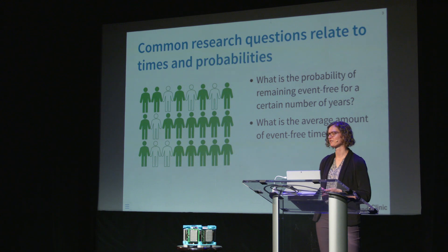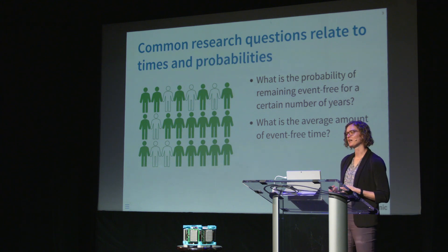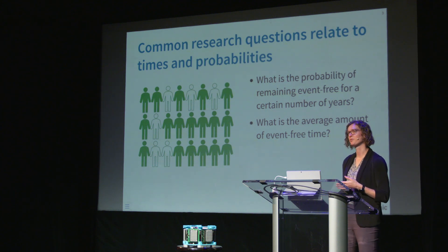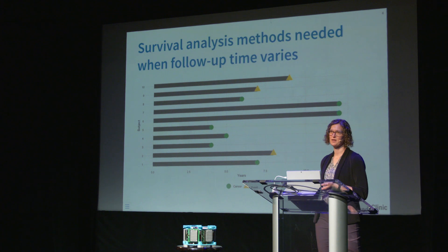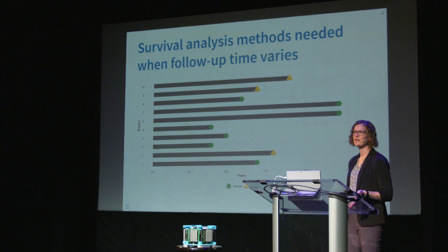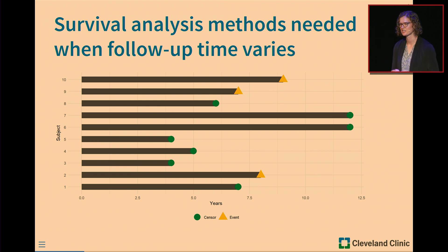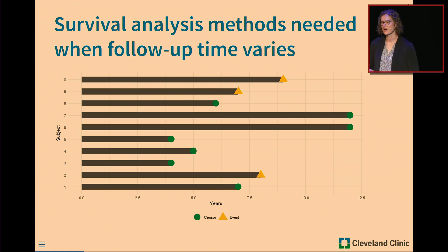Common research questions relate to times and probabilities: what is the probability of remaining event-free for a certain number of years, or what is the average amount of event-free time — in a population where some subjects have had the event and some haven't. This can seem like a binary endpoint, but the problem arises when we need specialized statistical techniques because patients are followed for varying amounts of time. Some patients had an event, some haven't, and each is followed for a different amount of time — which is why specialized survival analysis methods are needed.